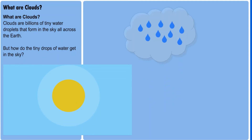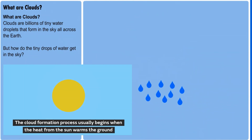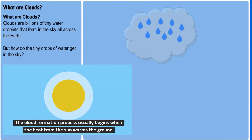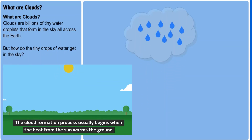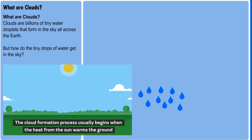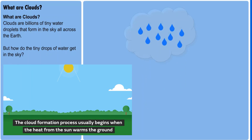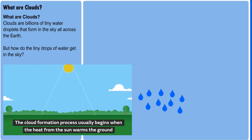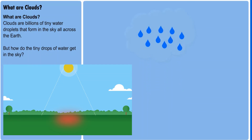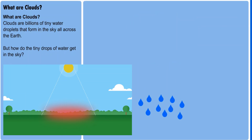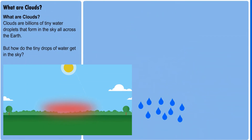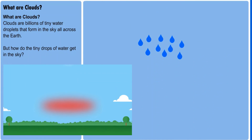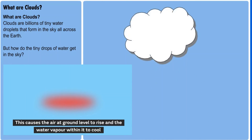Clouds are formed when the sun hits any surface body of water, like the sea, a lake or a river. This evaporates and the hot air will gradually cause this evaporated water vapor to rise up within the atmosphere.